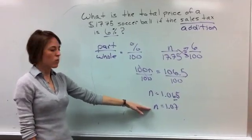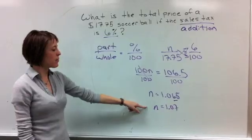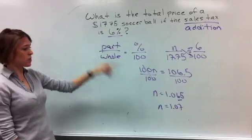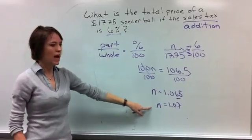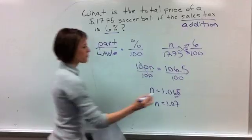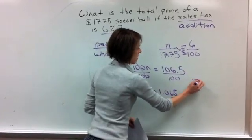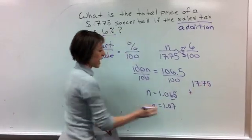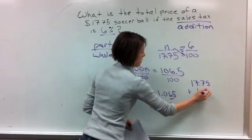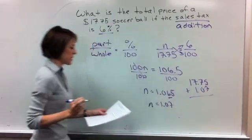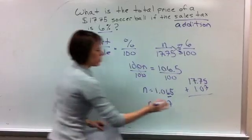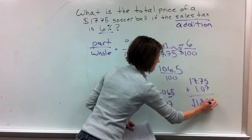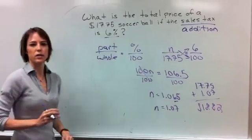So now are we done yet? No, we're not, because remember, this is just telling us how much tax we're going to pay. But since we're paying the $17.75, we have to take this amount and we have to add it. So we're going to take the $17.75, and we're going to add the $1.07. And that means that we're going to pay a total of $18.82 for our soccer ball.